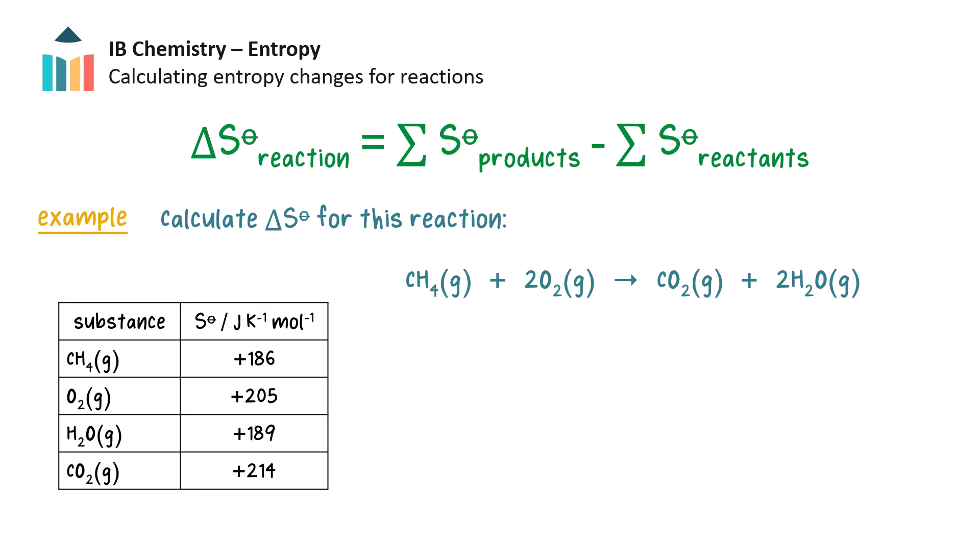We can look up the absolute entropies of each species in a table. For standard thermodynamic calculations, assume liquid water unless explicitly stated otherwise. Since we are given water as a gas, we must use the value for gaseous water instead of liquid water, according to the equation.